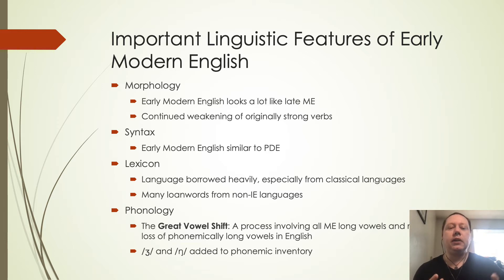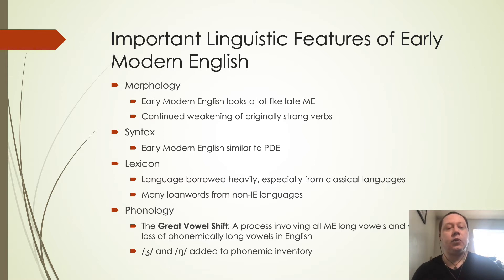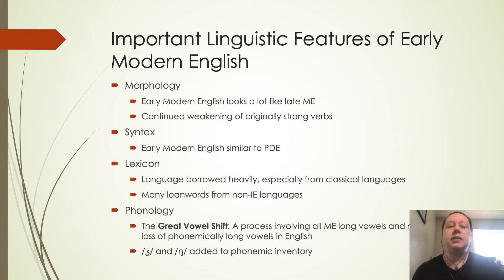Middle English vowels will match similarly to what we saw in the IPA. The great vowel shift is going to change our vowels very significantly during this time period, and we'll see that mostly in the next lecture. We also get a few new sounds that become phonemic rather than just being allophones, so we'll see some additional sounds become possible as well.